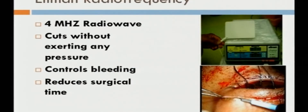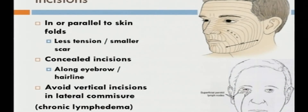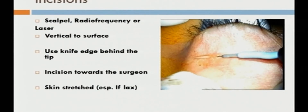For incision and bloodless dissection of tissue, Ellman radiofrequency is a very good tool that cuts tissue without exerting any pressure, controls bleeding, and reduces surgical time. Incisions in oculofacial surgery should be given parallel to the skin fold—that is, along relaxed skin tension lines. Whenever possible, one should use concealed incision locations along the eyebrow or hairlines, and avoid vertical incisions in the lateral commissure, which can cause chronic lymphedema. During incision, one should keep the scalpel or instrument vertical to the surface, use the edge rather than the tip of the knife, start away from the surgeon moving toward the surgeon, and keep the surface stretched.